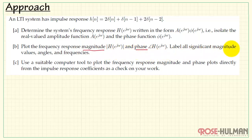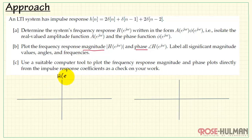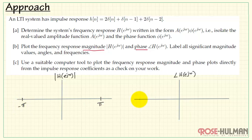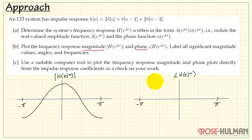In part B, we want to plot the frequency response magnitude as well as the phase. We'll have two plots altogether — the magnitude and the phase — using the main period, minus pi to plus pi, for the frequency omega. Broadly speaking, we're going to have a cosine-like function, and then a phase function which corresponds to minus omega.